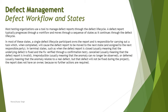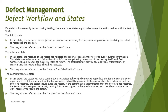We will further elaborate in more detail what exactly these states can be and what can be further put in as substates of a defect. For defects discovered by testers during testing, there are three major states in which the action resides with the test team: the initial state, the return state, and the confirmation test state.